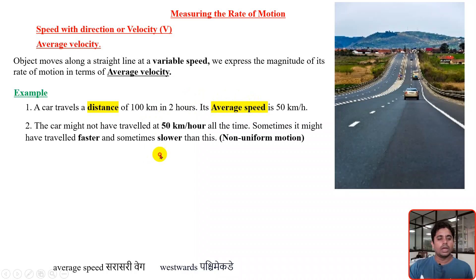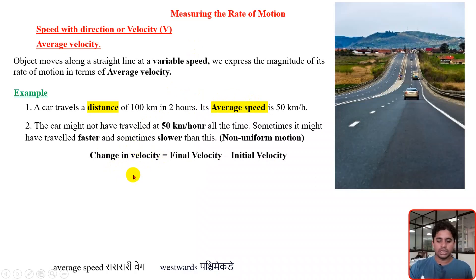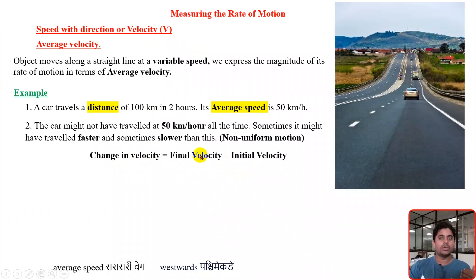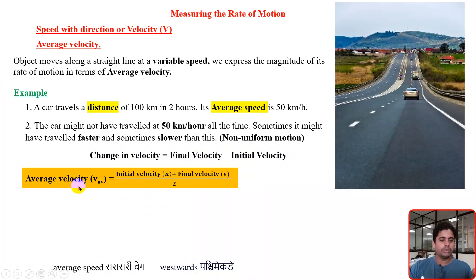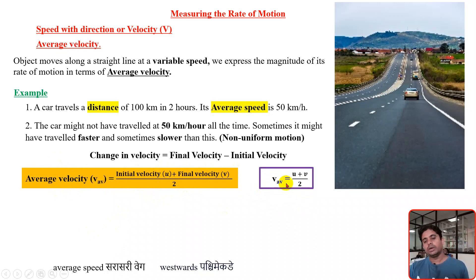Now I want to calculate the change in velocity. There is one more term — change in velocity. How we will calculate the change in velocity: for that we need two terms — one is the final velocity and one is the initial velocity. What initial velocity the object has, and at the end how much velocity that object has achieved — the difference between those we will call the change in velocity. Average velocity: we know the initial velocity, which we will denote as u, and the final velocity, which we will denote as v. So average velocity equals u plus v divided by 2. Simply take the average of initial and final velocity to get the average velocity. So v_average = (u + v) / 2.